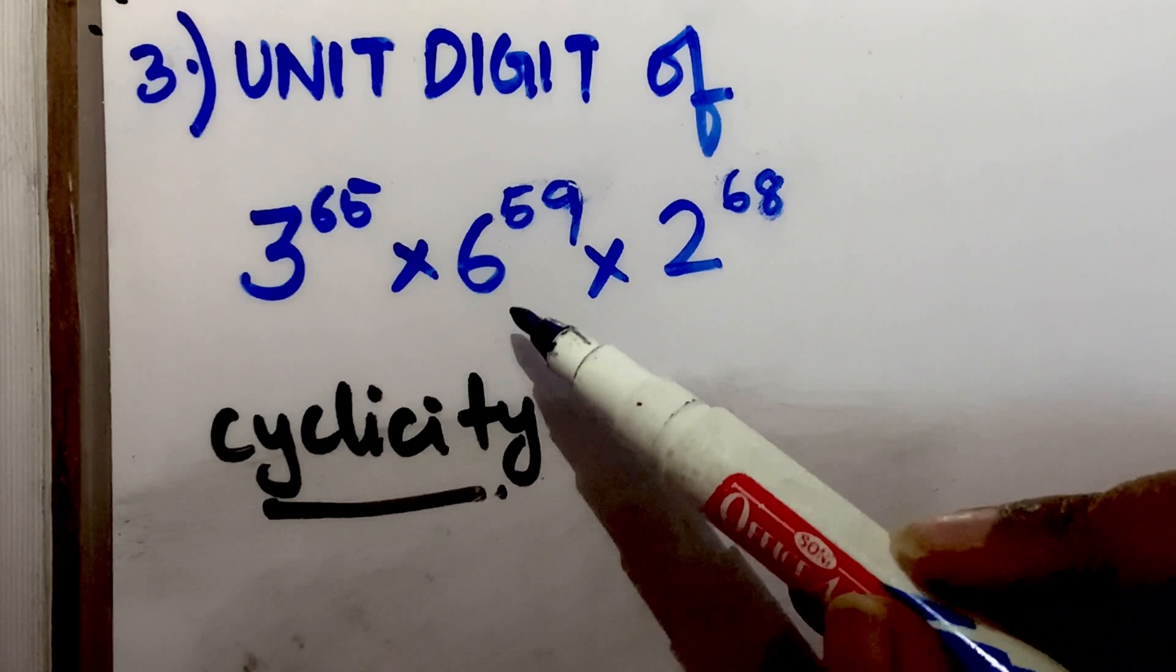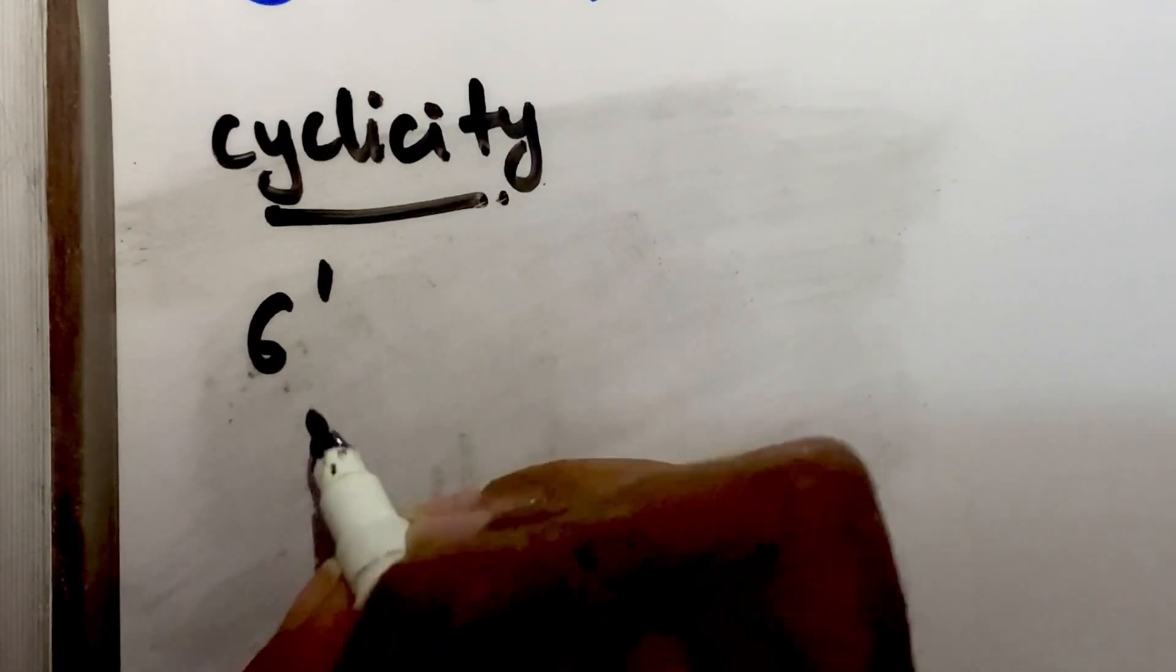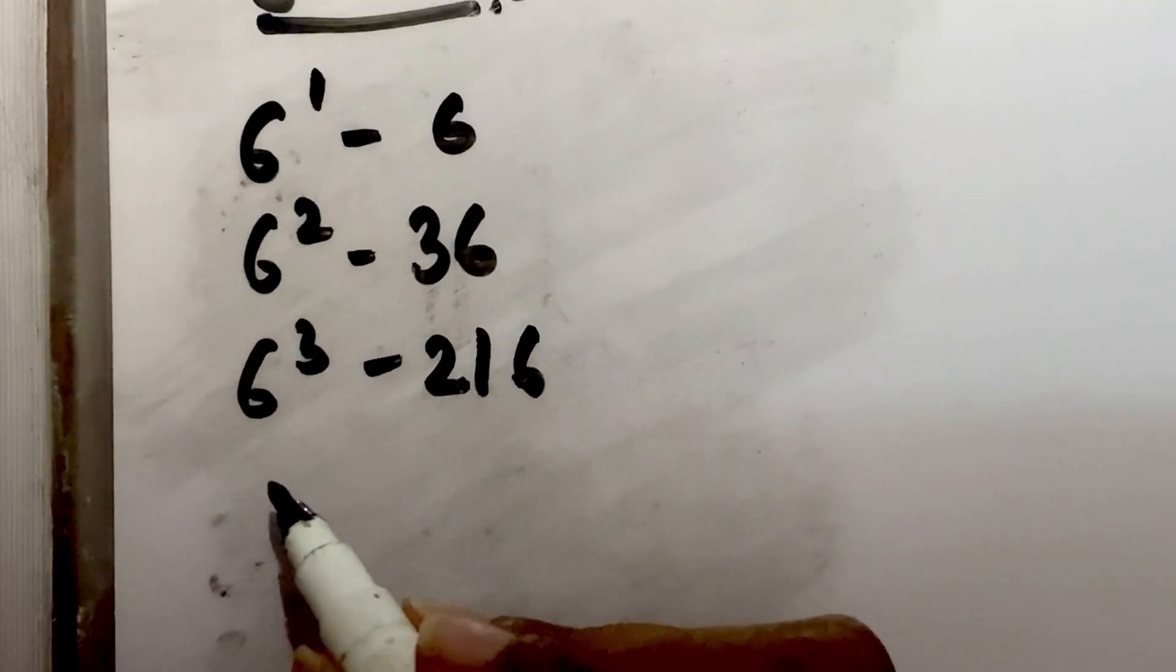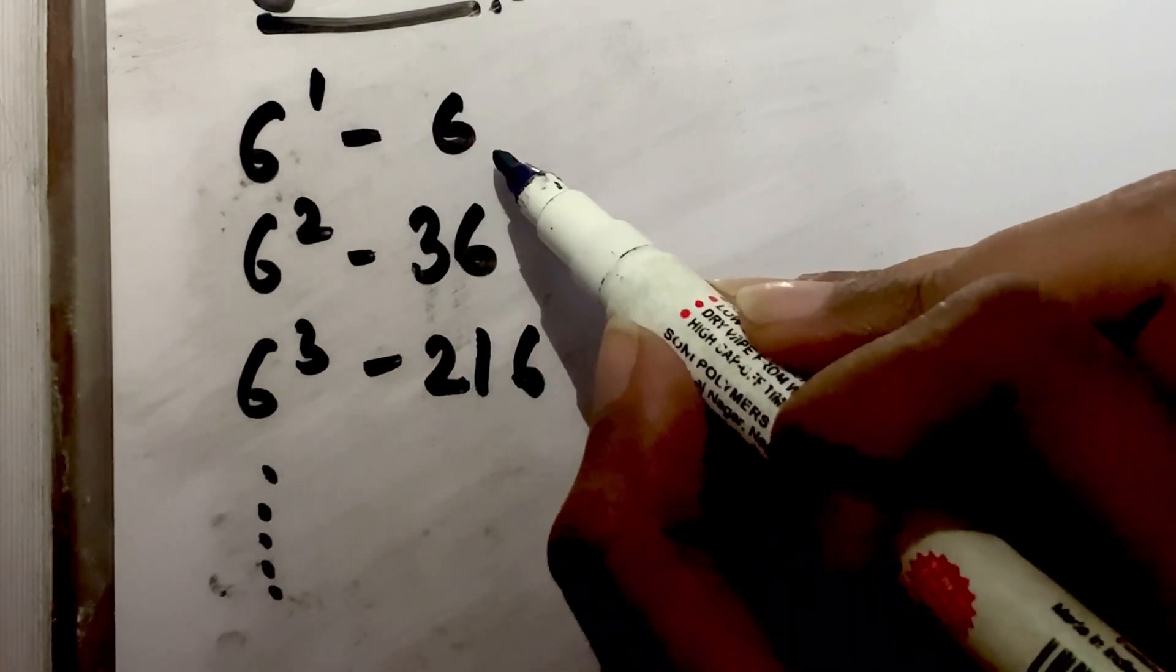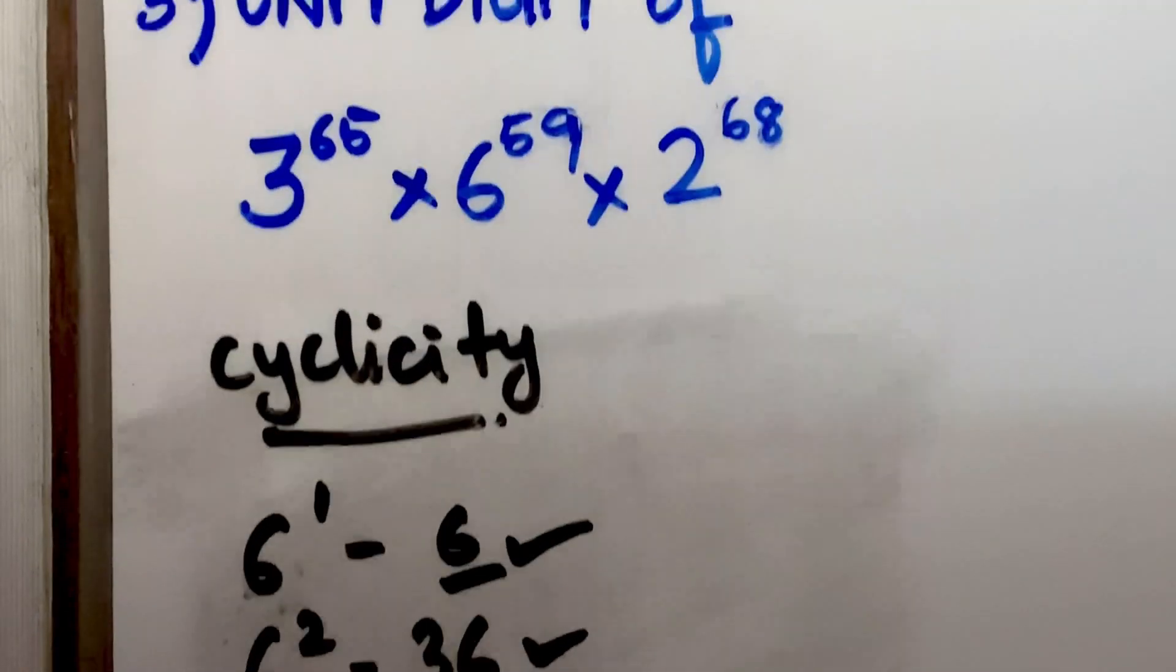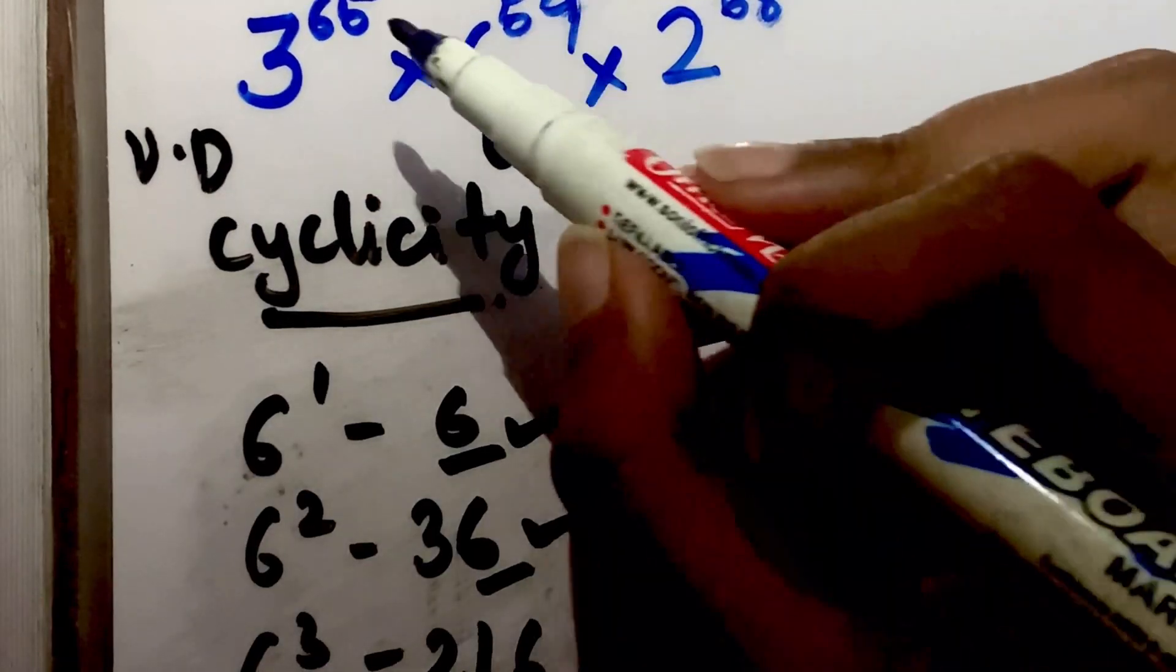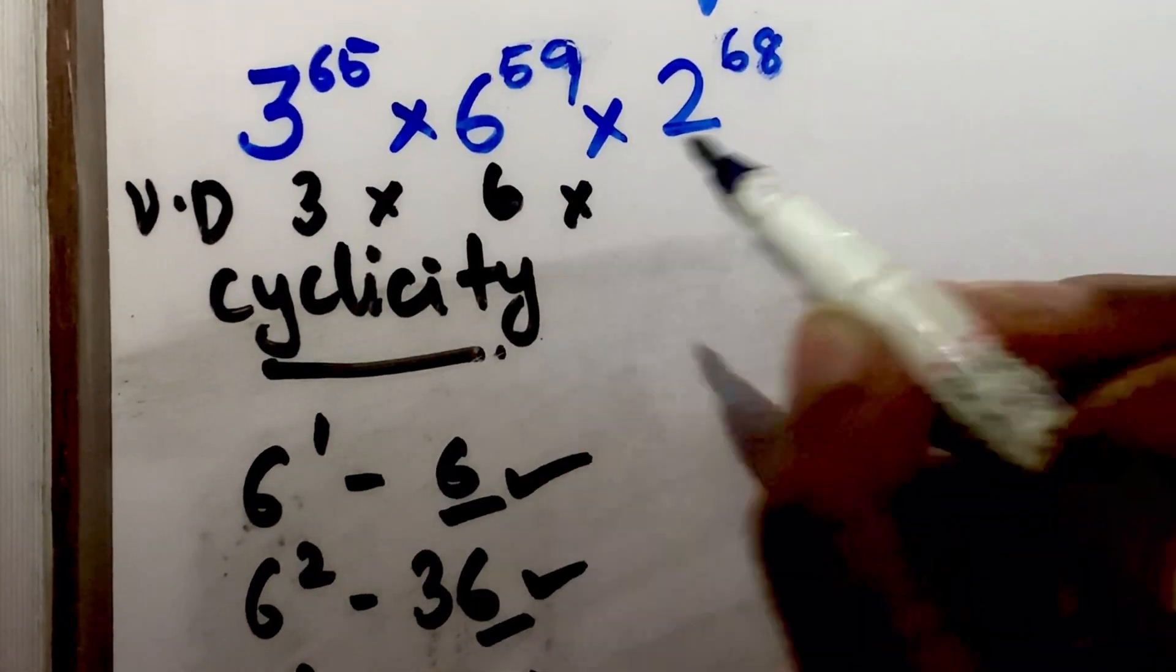Now next, find the unit digit of 6 raised to 59. Cyclicity of 6: 6 raised to 1 is 6, 6 raised to 2 is 36, 6 raised to 3 is 216, and so on. Observe: 6 raised to any number, the unit digit is always 6. So 6 raised to 59, the unit digit will be 6. For unit digits, we have 3 from 3 raised to 65.